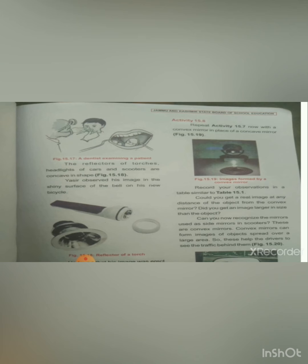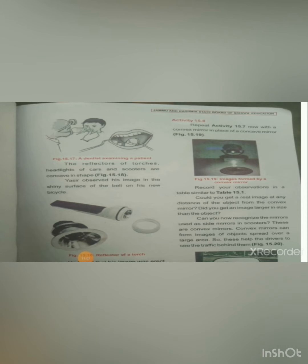The image from a convex mirror is always smaller than the object — it can be very small. Convex mirrors are used in vehicles because they can form images of objects spread over a larger area, giving a smaller but wider view of what is behind.